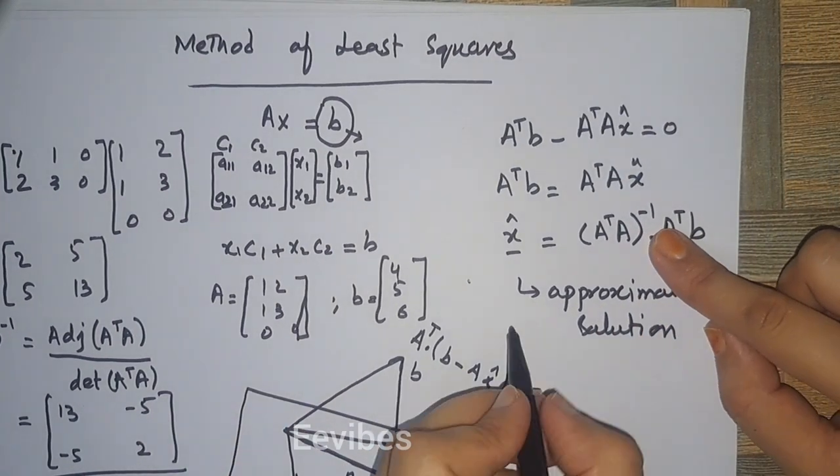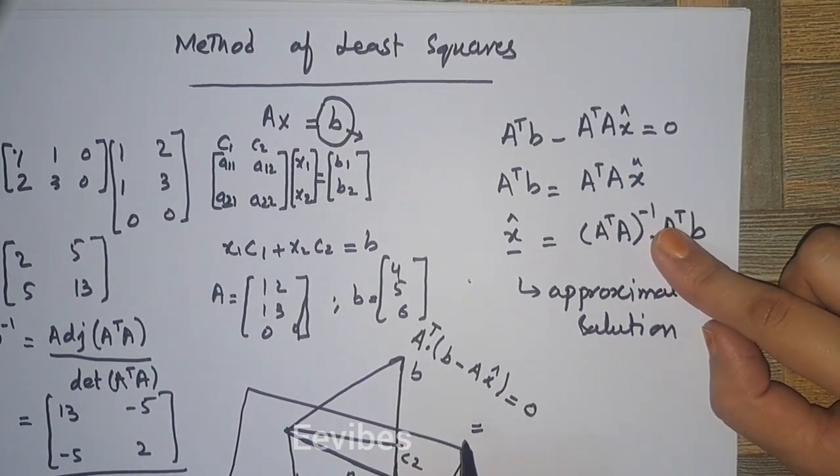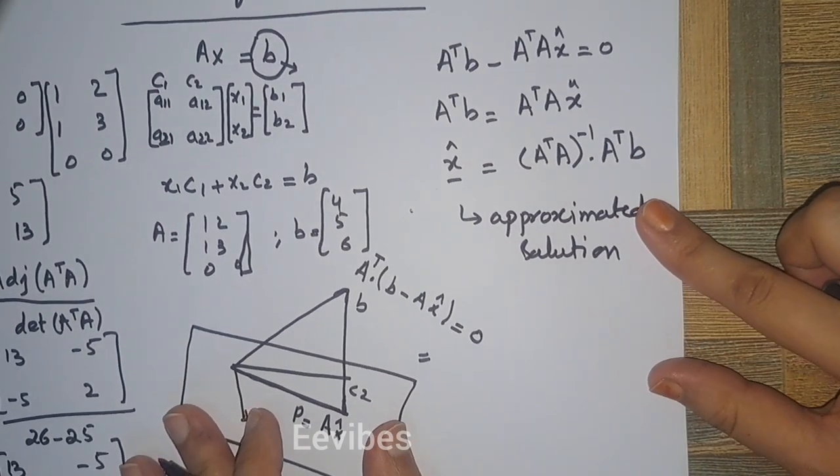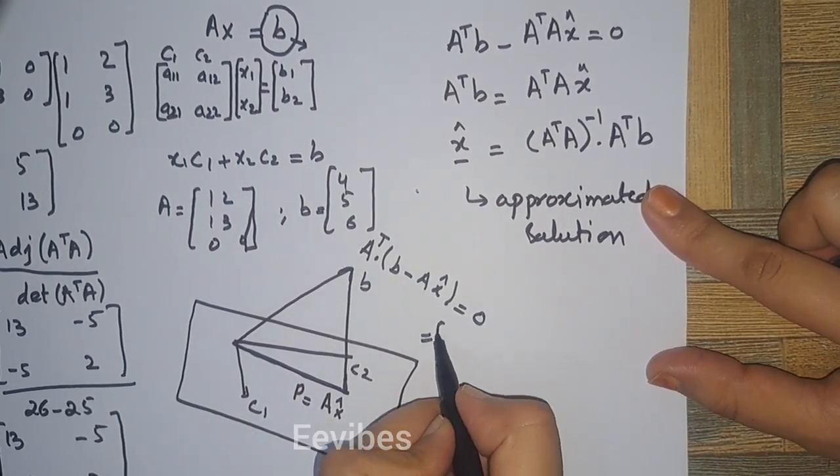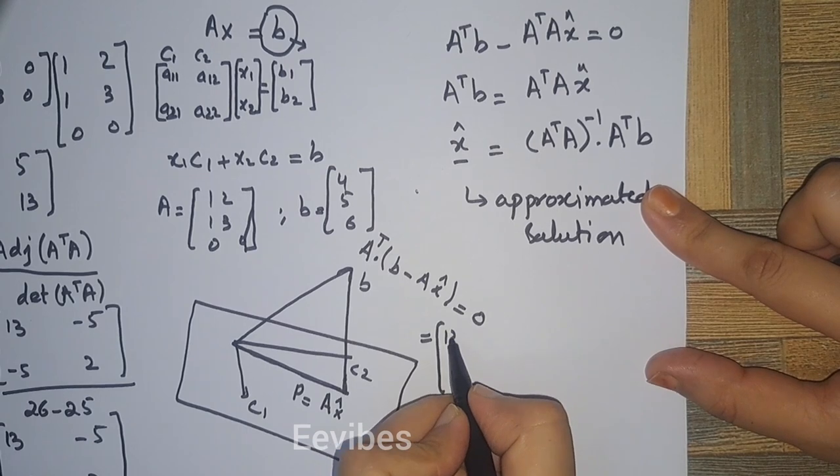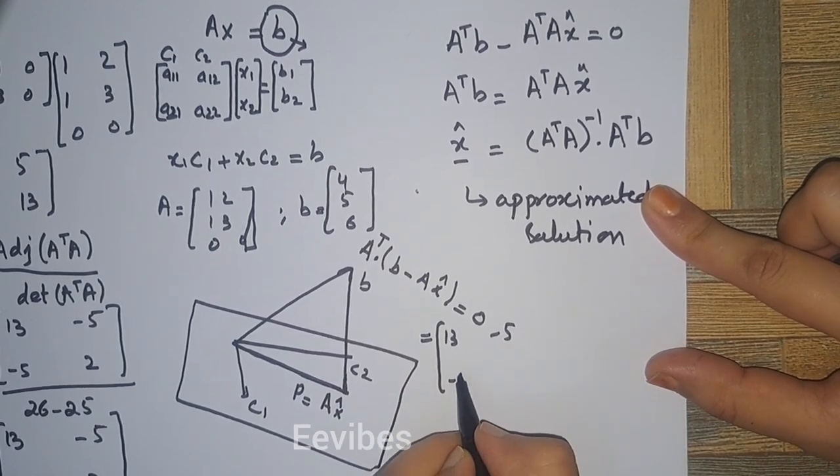The next step is to substitute the values over here and simplify further. So let's just substitute the values [13, -5; -5, 2].